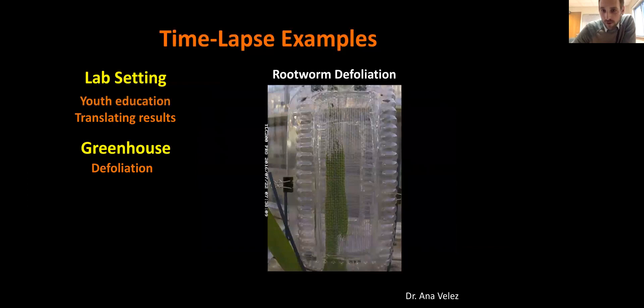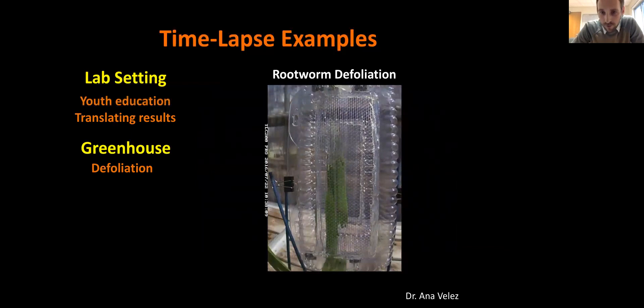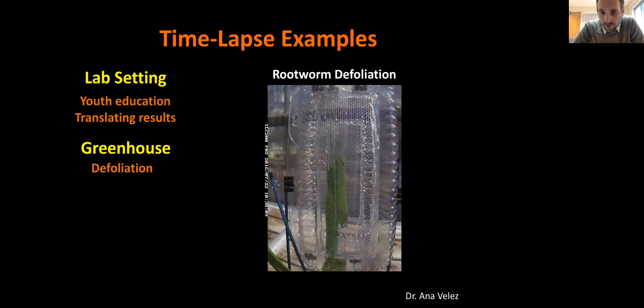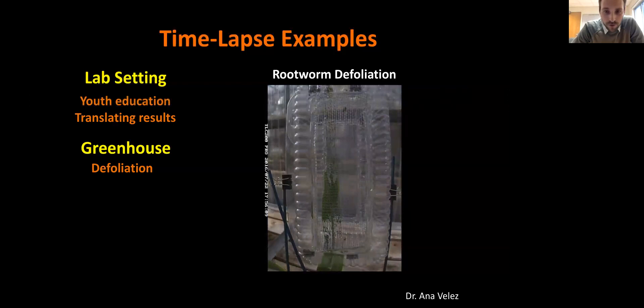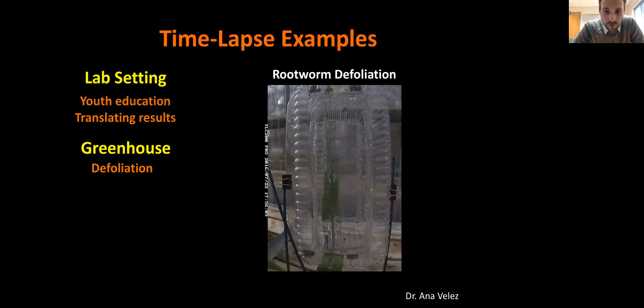Here's a greenhouse example. This was done as part of an RNAi project with Ana Valez here at the university — she's an insect toxicologist concerned about whether western corn rootworms were actually feeding on plant tissue expressing double-stranded RNAi RNA. This provided a way of quantifying that consumption, at least in terms of area consumed over time, and a neat way of talking to growers about defoliation.